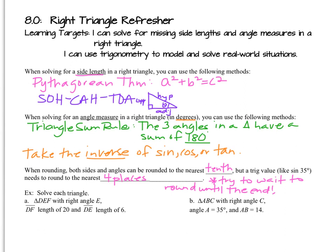If you have to type in a trig value and write that answer out, this is where we need to be more particular. Trig values need to be rounded to the nearest four decimal places. From last chapter, we would say cosine theta equals 0.1234 — it was always four places past the decimal. Our goal will be to wait to round until we plug everything in one time, so that we're only rounding our answer once.